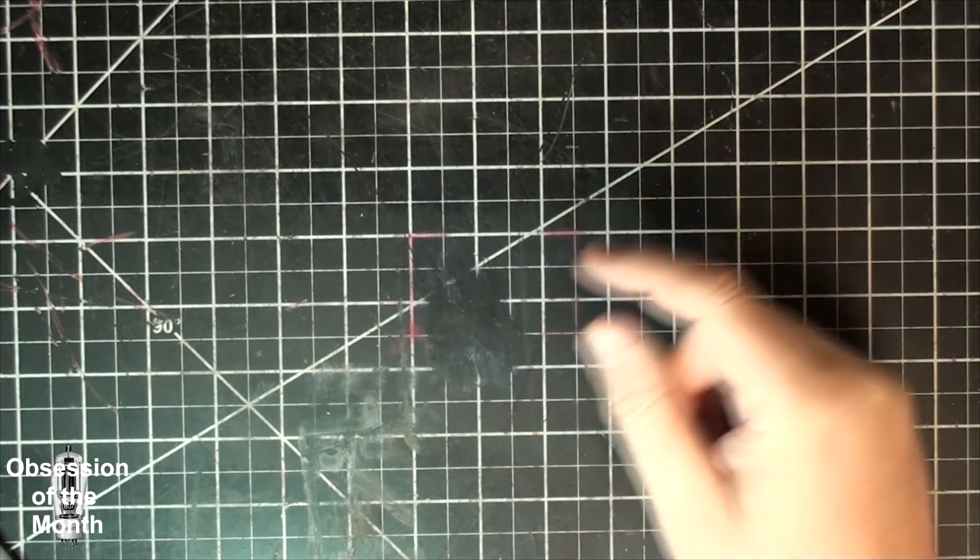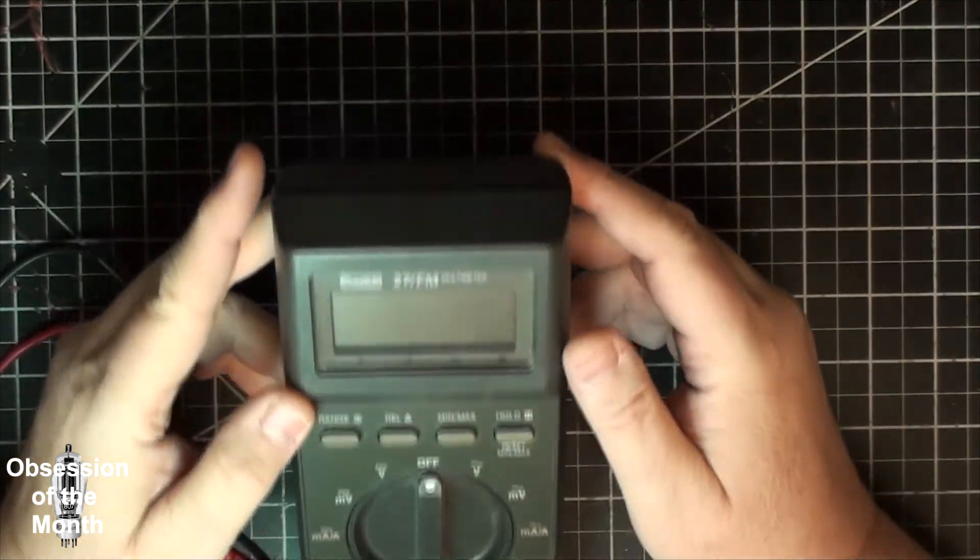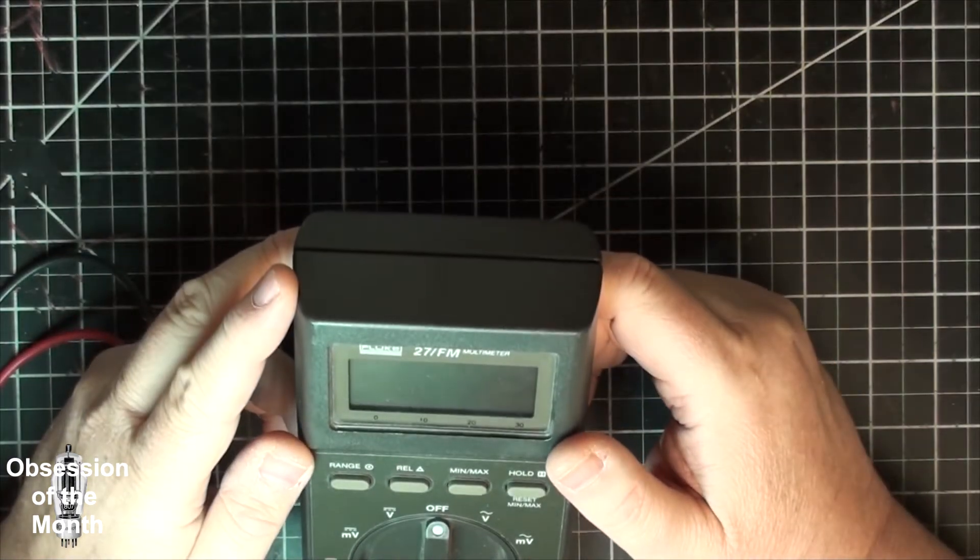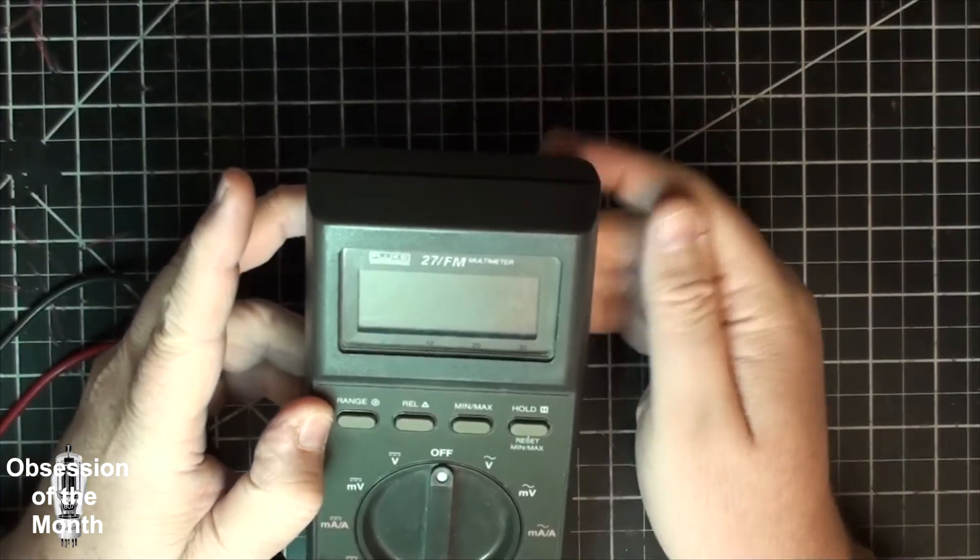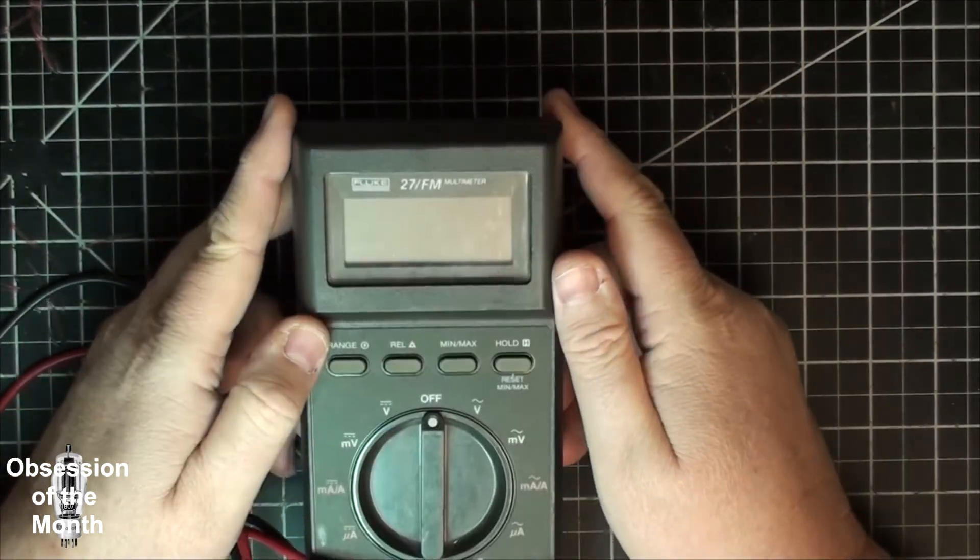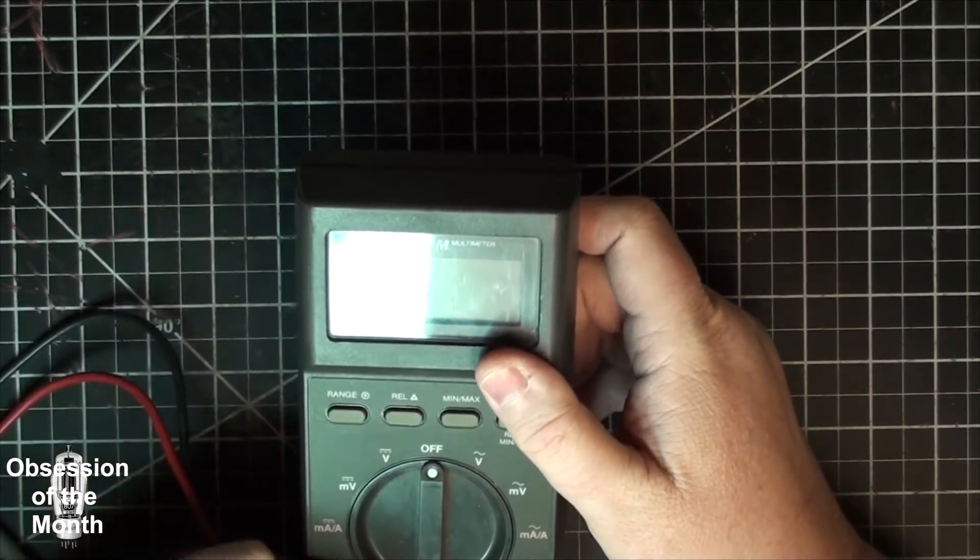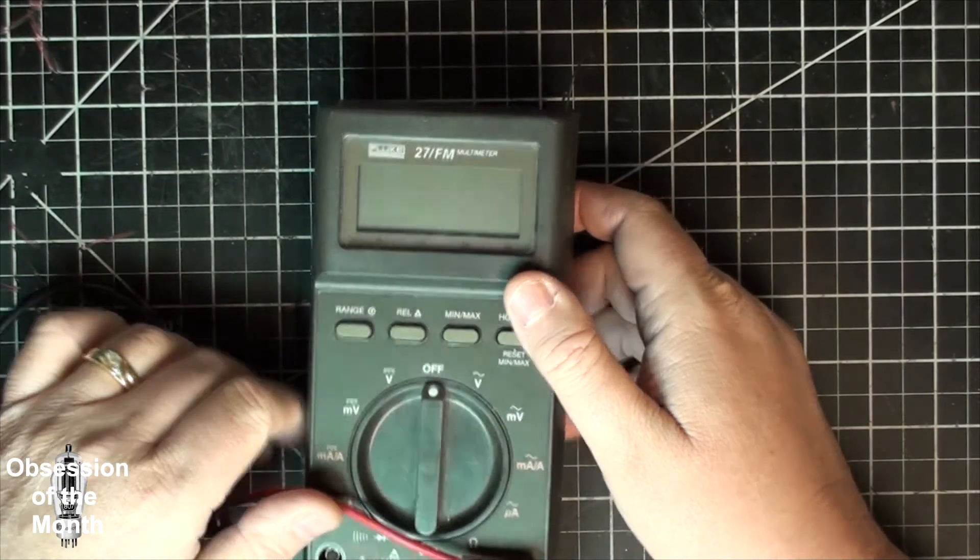One of the major differences between a Fluke 27 and a Fluke 27FM is, based on all the information I can find, the Fluke 27FM is a true RMS multimeter. The 27 is not. The 27 is what they call it, averaging.